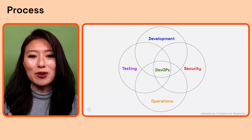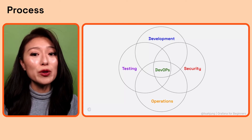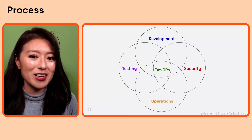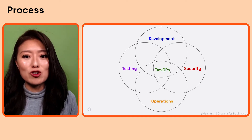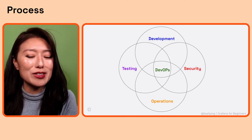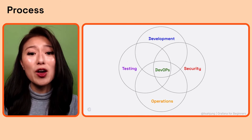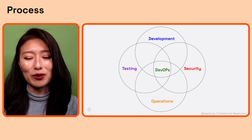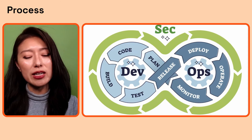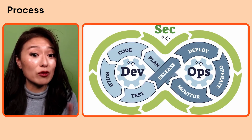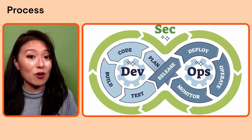DevOps encourages each team to contribute to the planning and designing of the process. As a result, they create a framework to ensure the quality, reliability, and security of the software throughout the delivery process. DevOps turns what used to be a linear process into an infinite loop, so you can continuously integrate these improvements and deliver high quality software faster.